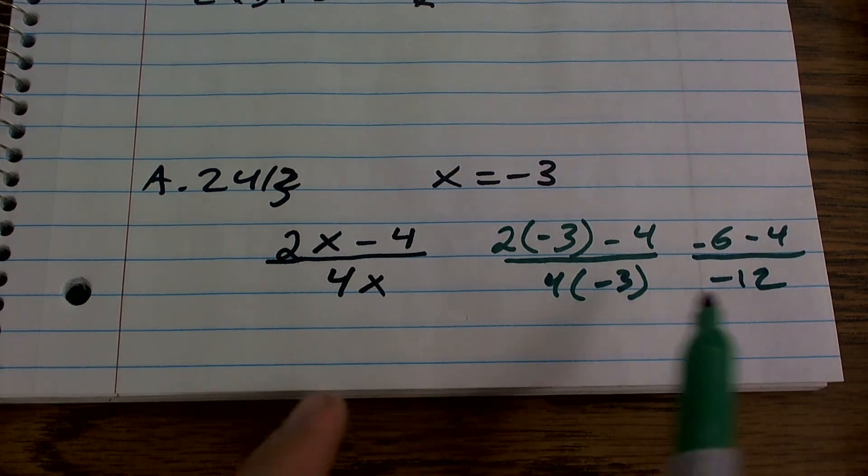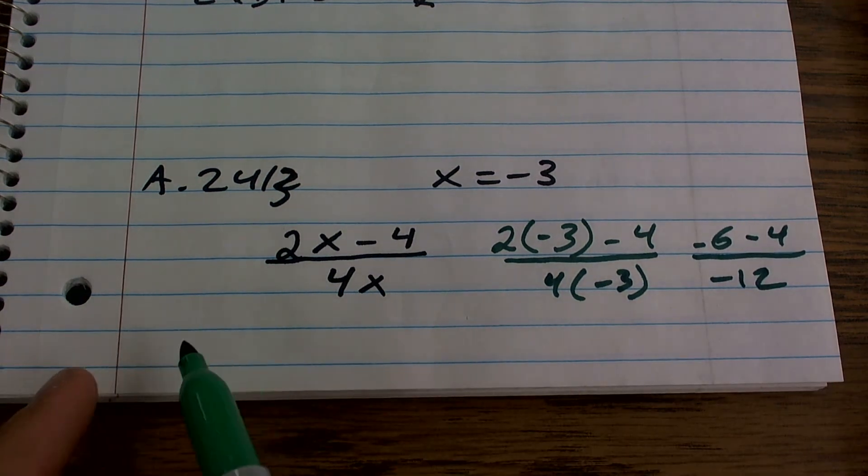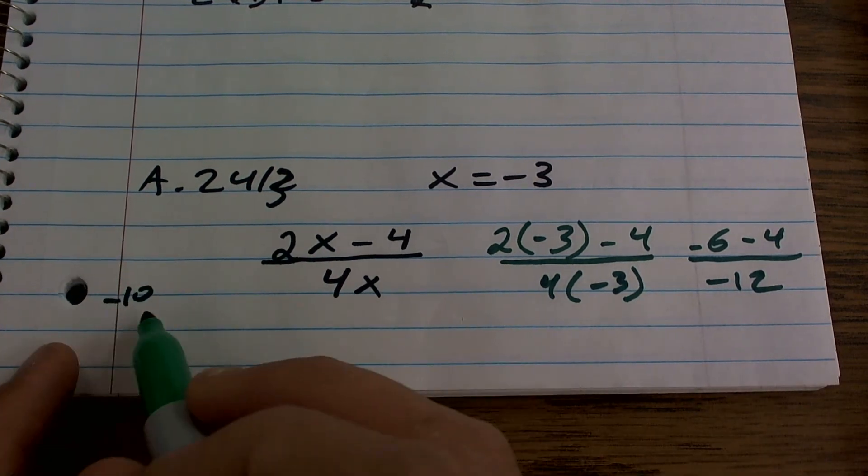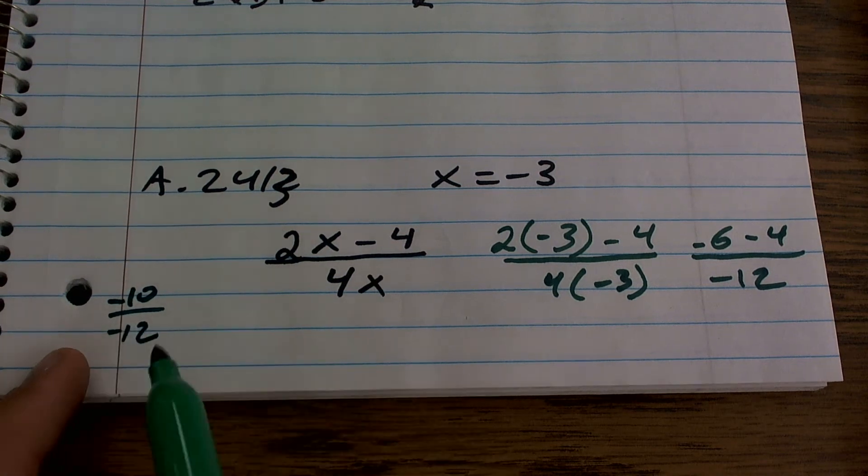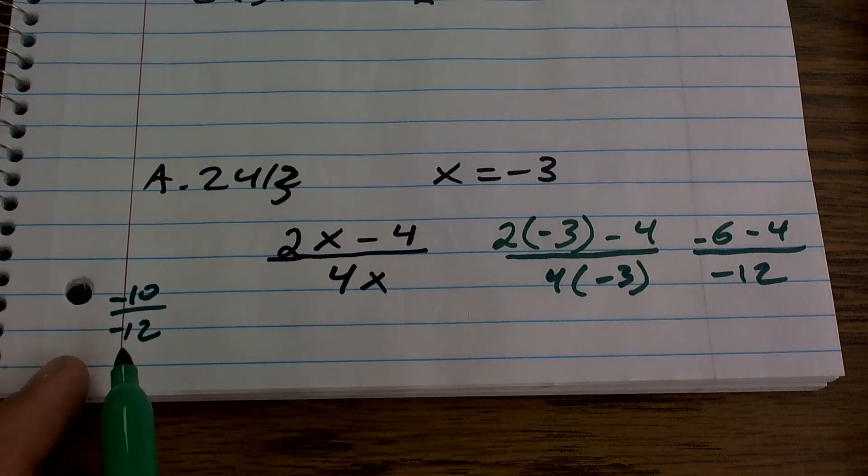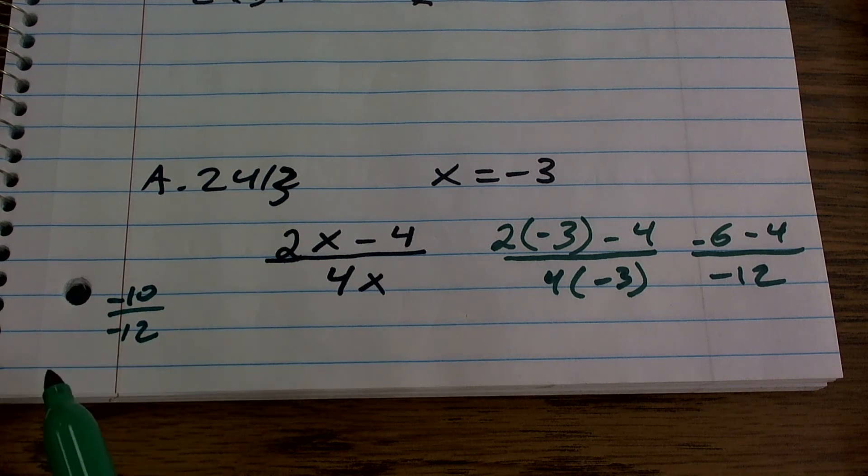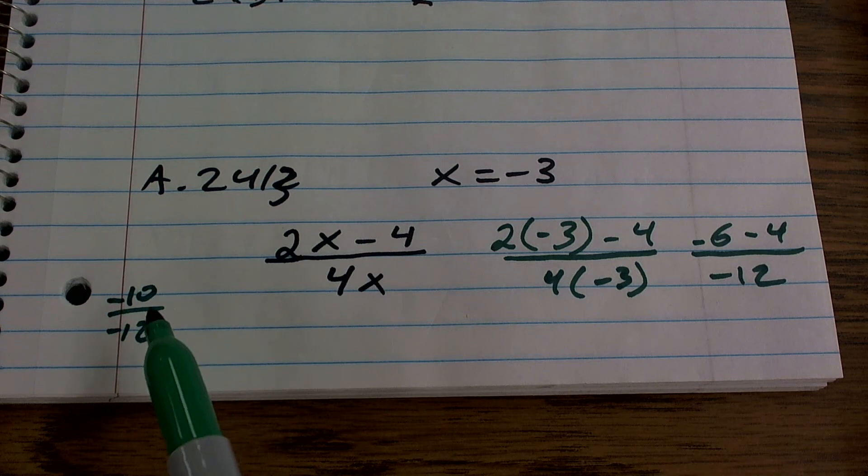Now I'm going to move this work over here because I ran out of space. Negative 6 minus 4 is negative 10 divided by negative 12. We notice we have a negative divided by a negative, so the negatives cancel out. Then I need to see, can I reduce this fraction? Can I make this fraction more simple?